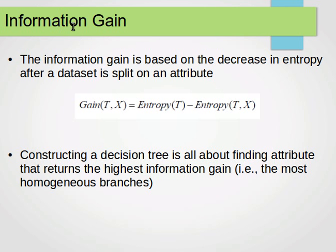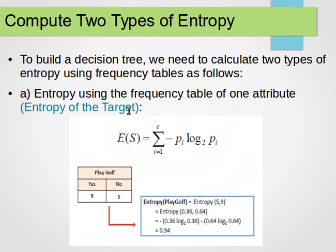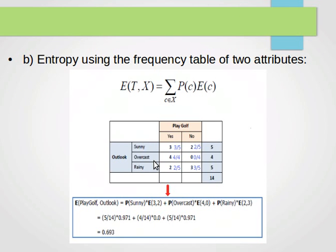After that, we compute the information gain. The information gain is based on the decrease in entropy after a dataset is split on an attribute — it is entropy before splitting minus entropy after splitting. Constructing a decision tree is all about finding the attribute that returns the highest information gain, i.e., the most homogeneous branches. We want the one that gives the lowest entropy after splitting, so the difference is as high as possible.